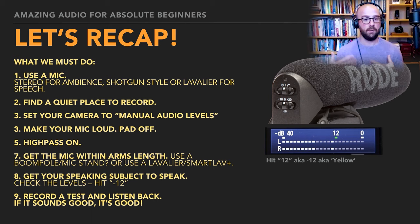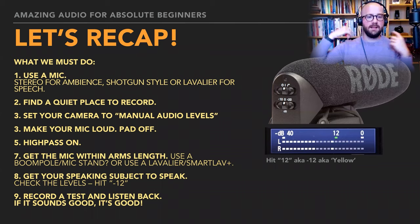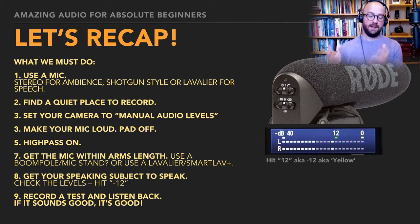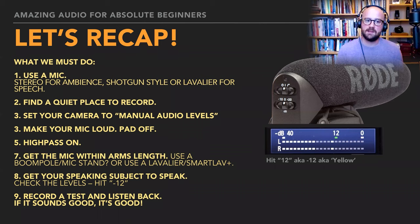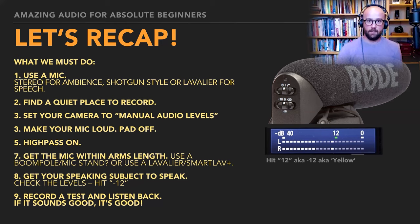A quick recap on the process: use a stereo mic for ambience, shotgun style or a lav for speech. Find a quiet place to record — the room matters a lot. If you go into a room and clap, you can hear the echo; compare a living room with soft furnishings to a bathroom and you'll hear that difference. The human ear is amazing and we tune a lot of that out, but you really do hear it when you use microphones.